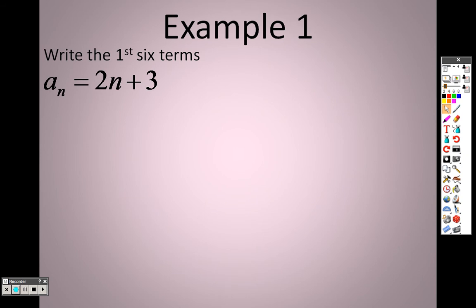With example 1, I give you a formula, and that formula is 2n plus 3. You start by plugging in a 1 for the first term and work up to plugging in a 6 for the sixth term. I plug in a 1, so a sub 1, 2 times 1 is 2, plus 3 is 5.